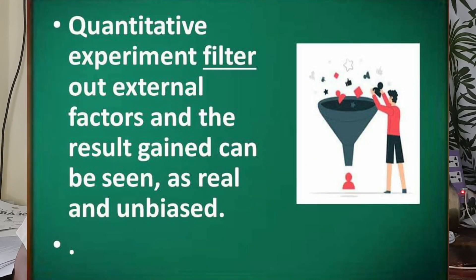Another strength: quantitative research can filter external factors and the results gained can be seen as real and unbiased. With a large number of respondents, you can filter to get the real outcome. In qualitative research, bias can occur because you can select people who relate to your title or research topic.